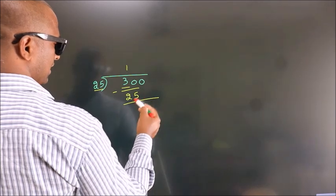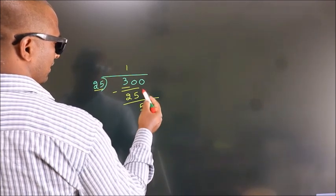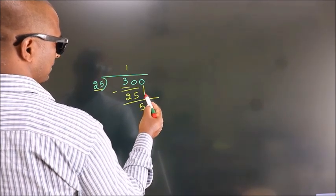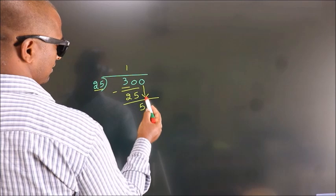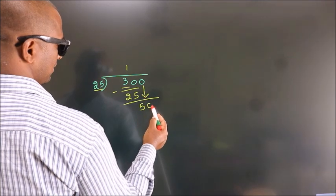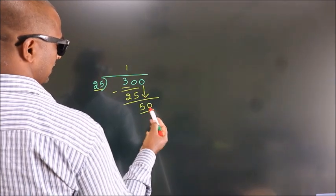After this, bring down the beside number. So 0 comes down. So we have 50.